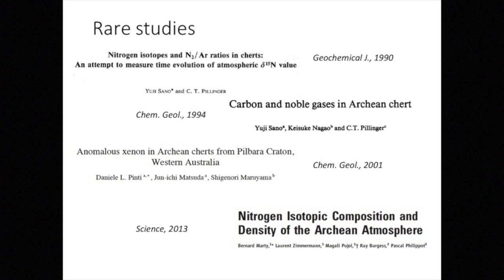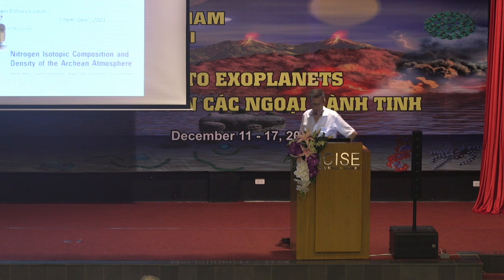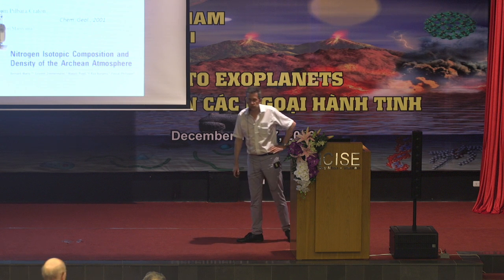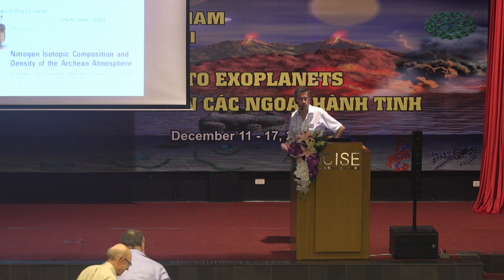This type of study is quite rare. There was initial work done in 1990 by the group of Yuji Sano when he was a postdoc with Colin Pillinger at Open University, trying to use the nitrogen-argon system to measure the time evolution of the atmospheric isotopic value of nitrogen. The same group did the few existing data on noble gases — heavy noble gases at least, like krypton and xenon — in Archean rocks. In 2001, we published a paper with groups from TITEC and OSECA showing mantle xenon preserved in Archean rocks. And most recently, again the group of CRPG Nancy published a paper where they claim to calculate the partial pressure of nitrogen and the nitrogen isotopic composition of the Archean atmosphere.